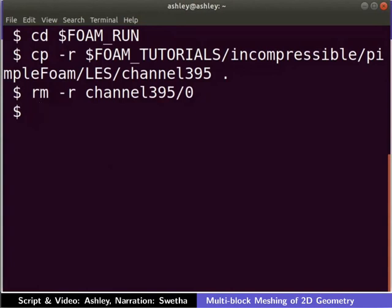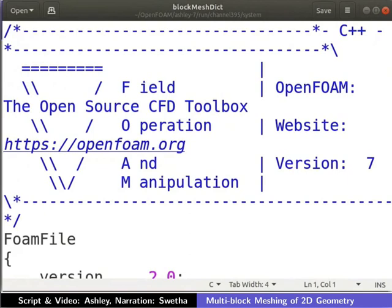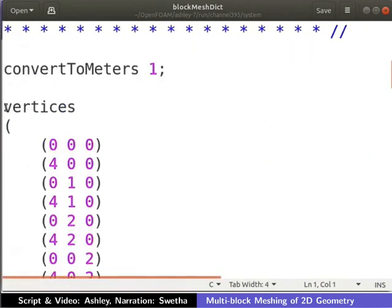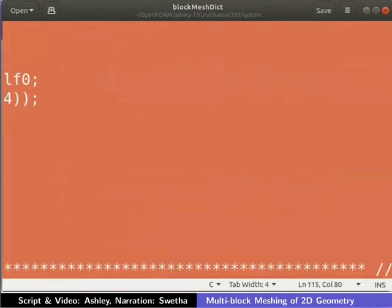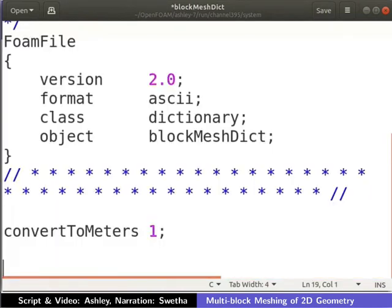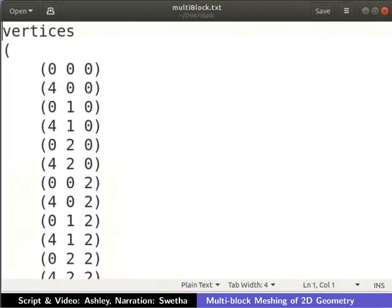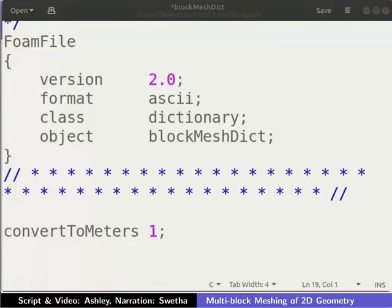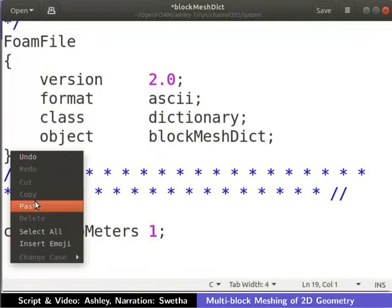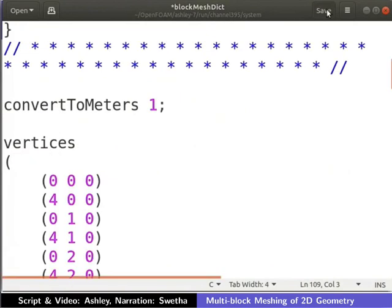Now open the blockMeshDict file in a text editor. I am opening it in the gedit text editor. Select the contents of the file from vertices to the end of the document as shown. Then, delete the selected section as we will be entering the input parameters. Next, open the multi-block.txt file that you had downloaded in the text editor. Copy the entire content of the text file. Paste the copied content into the blockMeshDict file as shown. And save the file.